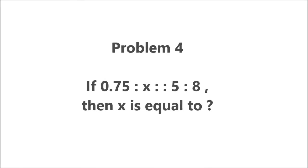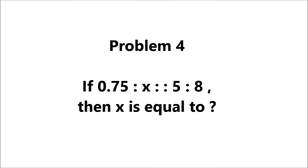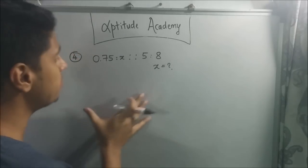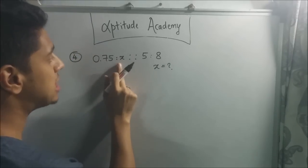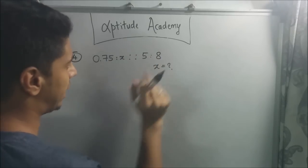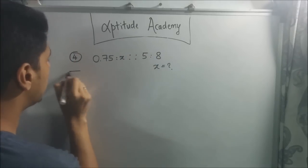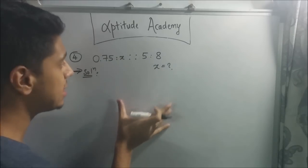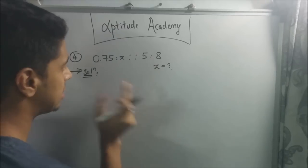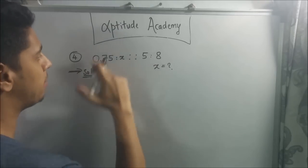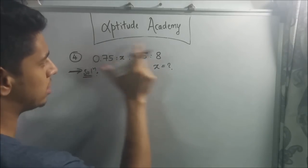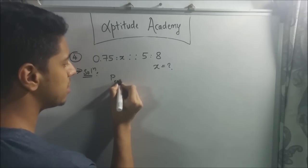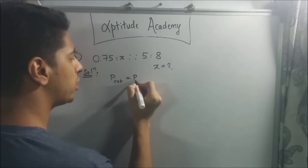Let's go to problem number 4. Problem 4: If 0.75:x is the same as 5:8, then x equals? Problem 4 says that 0.75:x is the same as 5:8, so what is x? This problem revolves around the property of proportions that says the product of the extremes equals the product of the means. The extremes, as I have explained in my earlier lecture, are these two terms, the outer terms, and the inner terms are known as the means. So it says that the product of the extremes equals the product of the means.